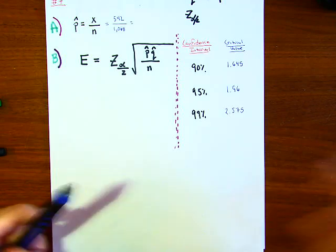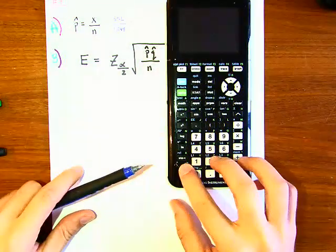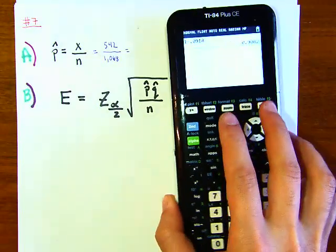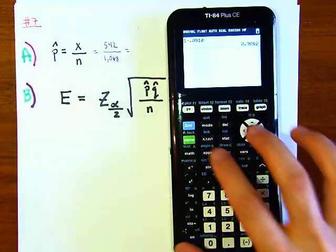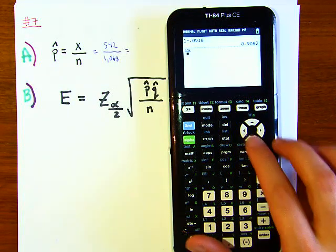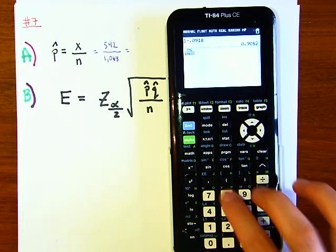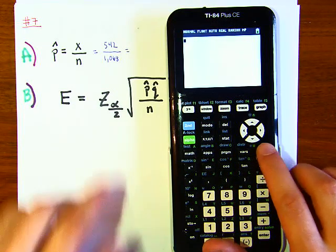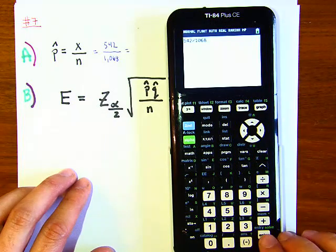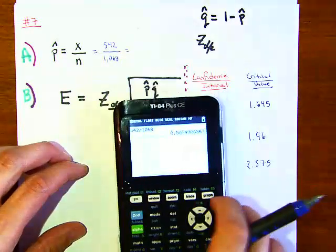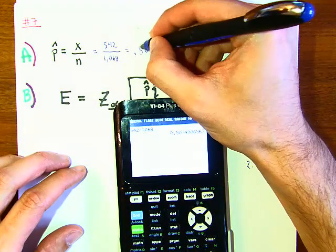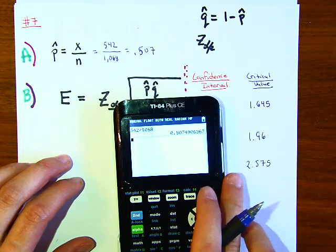Let's see what this equals as a decimal. So 542 over 1068, and that equals... I have 0.507. So here to find the next, this will be our p-hat.